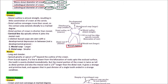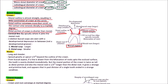First, we will discuss the buccal aspect. The crown mesial outline is almost straight, resulting in little constriction of the crown at the cervix. The distal outline converges more than usual, so the contact area extends distally to a marked degree. The distal portion of the crown is shorter than the mesial. The cervical line dips apically where it joins the mesial root, dipping towards the bifurcation of the root.